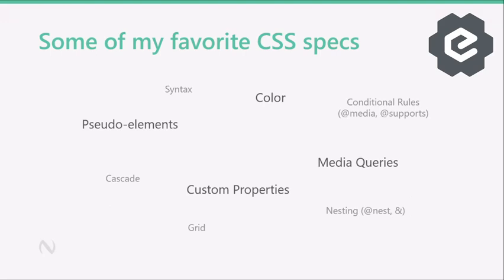And there's media queries, custom properties — CSS variables — and pseudo-elements. And of course, my number one specialty is CSS selectors. They're pretty simple: they just say which elements on the page do I want to select, and what do I want to do with them? But there are a lot of different techniques you can use to match elements by applying a variety of conditions. And even though CSS3 selectors are not as powerful as they can be in Selectors Level 4, there's still quite a fair bit you can do with them.